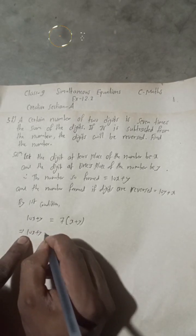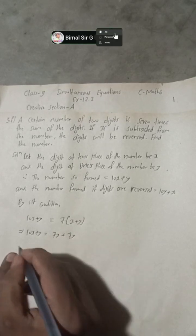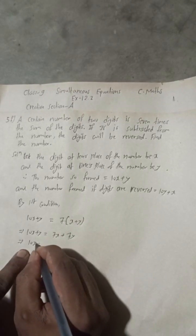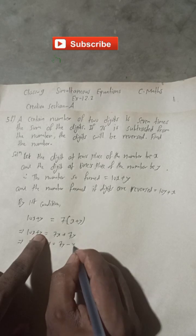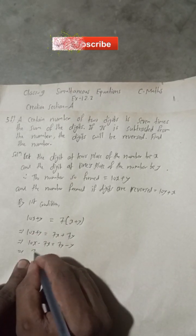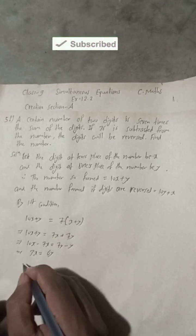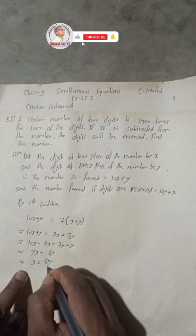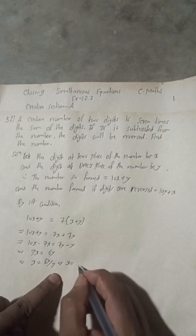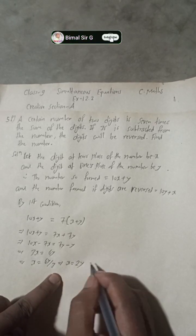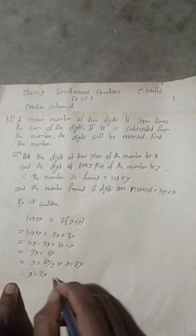Solving: 10x + y = 7x + 7y, so 10x − 7x = 7y − y, which gives 3x = 6y, so x = 6y/3 = 2y. Therefore x = 2y is our Equation 1.